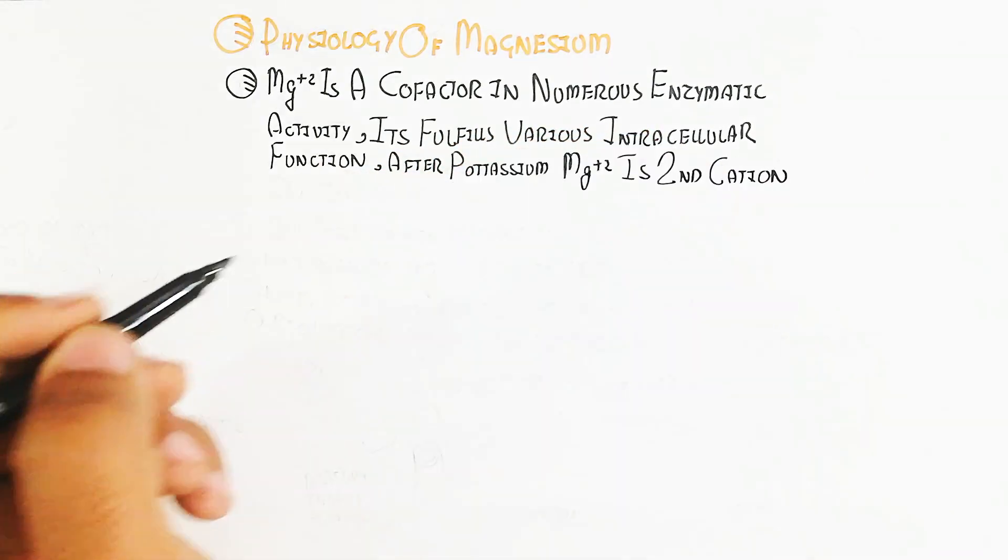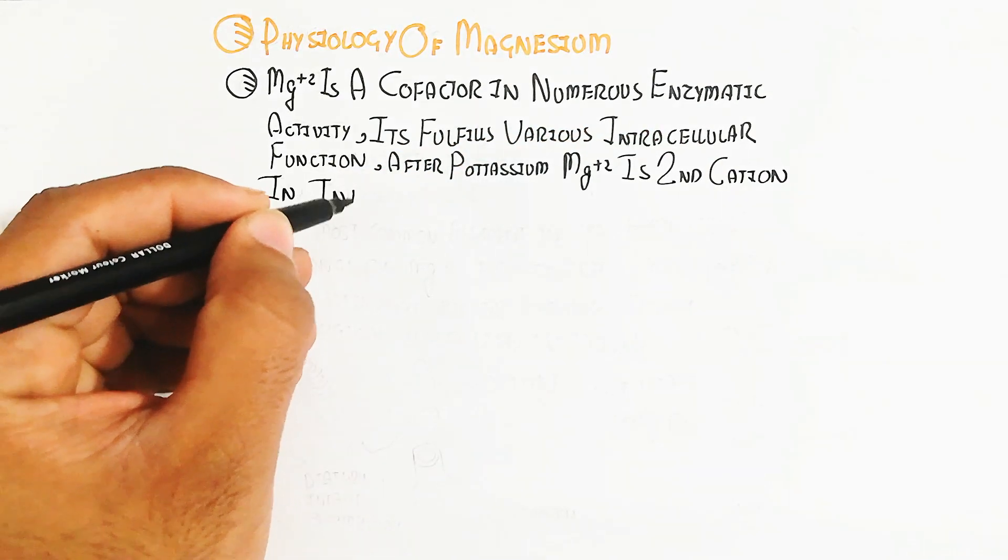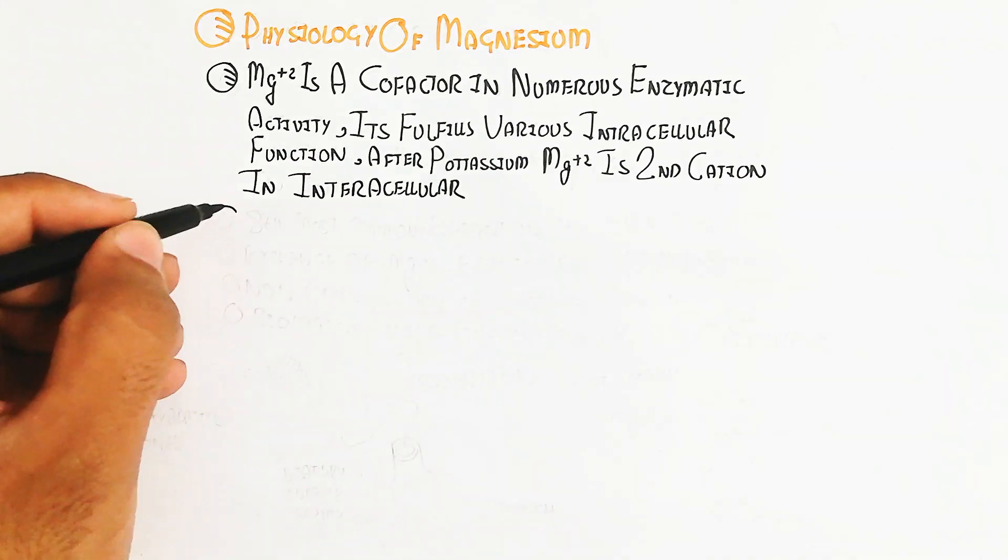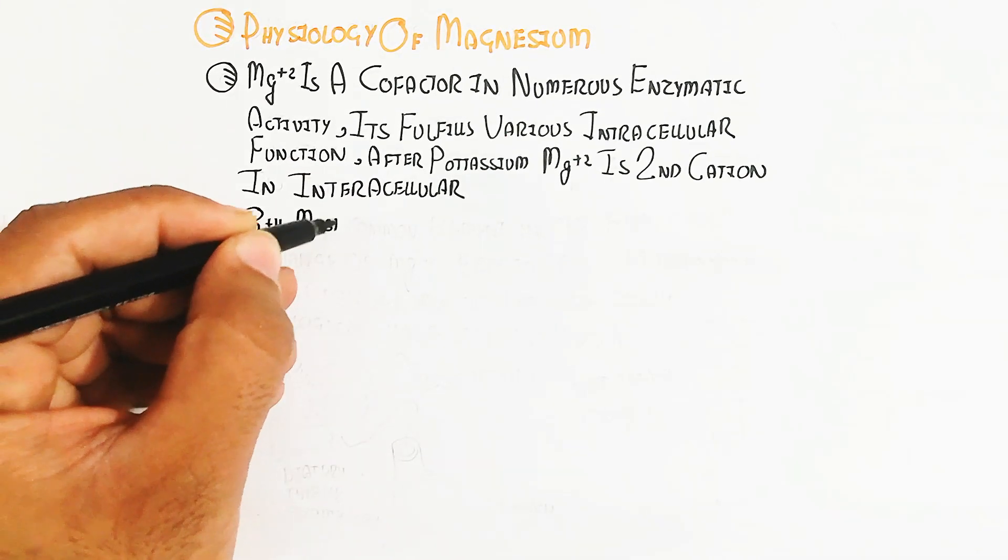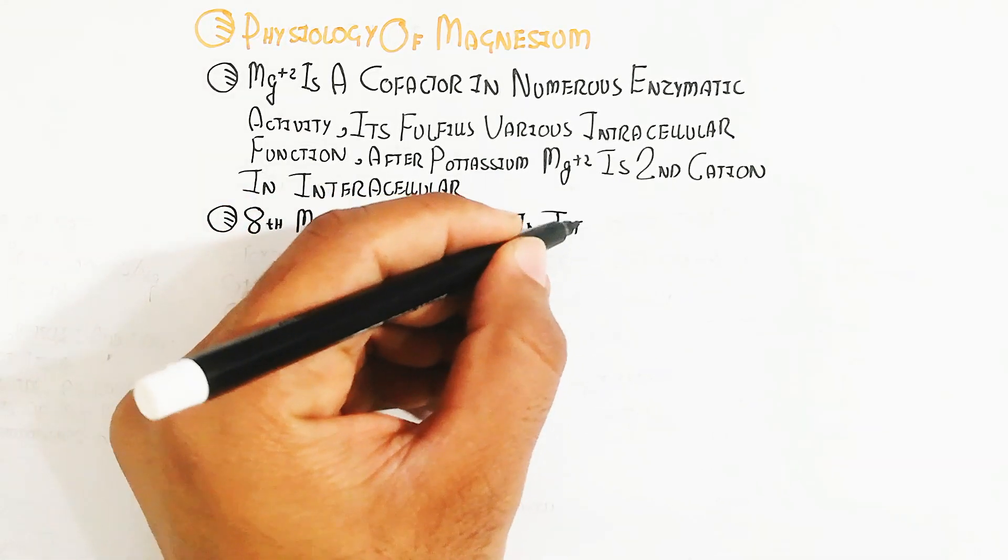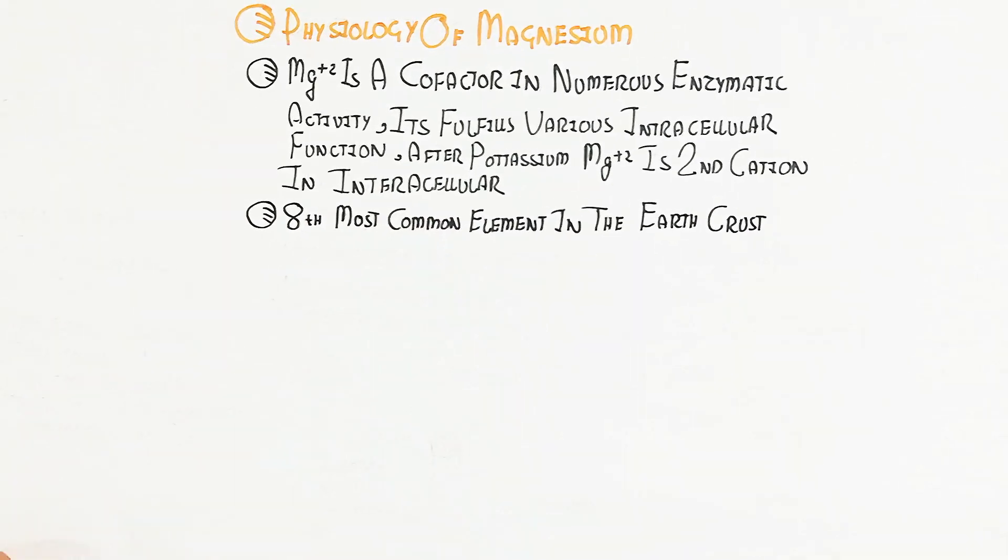Sodium is an extracellular cation. Magnesium is the eighth most common element in the Earth's crust, and the diet contains magnesium that we need.